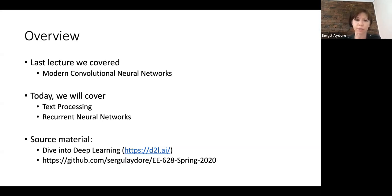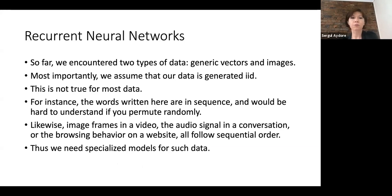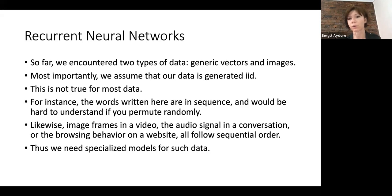So why do we need recurrent neural networks? So far we have encountered two types of data: generic vectors and images, and we assumed our data is identically independently distributed. Of course this is not true for most data. For example, words in a sentence are in sequence — you cannot understand them if permuted randomly. Image frames in a video, audio signals, or browsing behavior also follow some sequential order, so we need specialized models for sequential datasets.